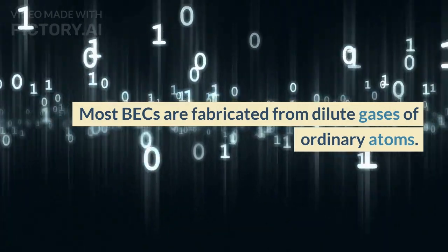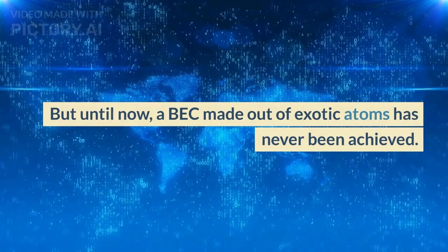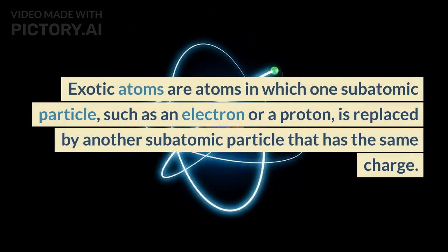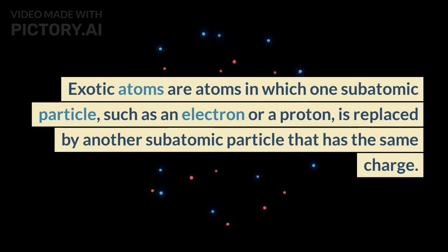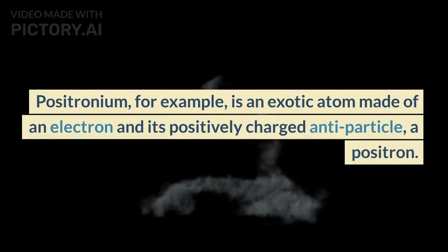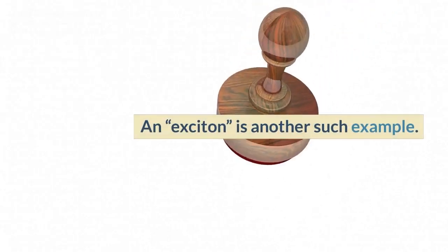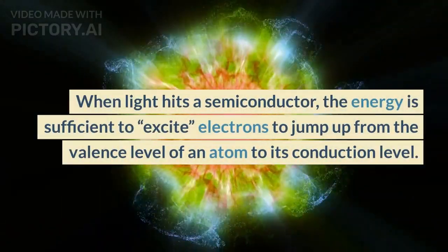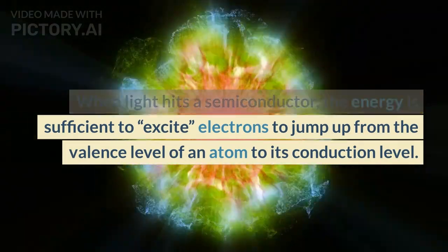Most BECs are fabricated from dilute gases of ordinary atoms, but until now, a BEC made out of exotic atoms has never been achieved. Exotic atoms are atoms in which one subatomic particle, such as an electron or a proton, is replaced by another subatomic particle that has the same charge. Positronium, for example, is an exotic atom made of an electron and its positively charged antiparticle, a positron. An exciton is another such example. When light hits a semiconductor, the energy is sufficient to excite electrons to jump up from the valence level of an atom to its conduction level.